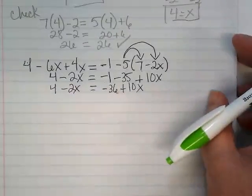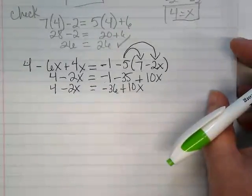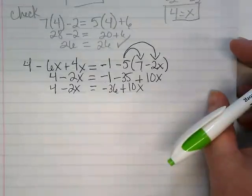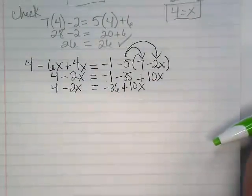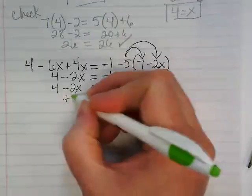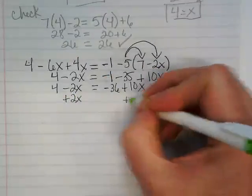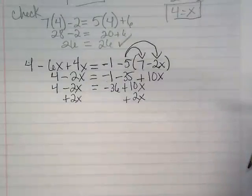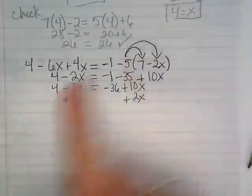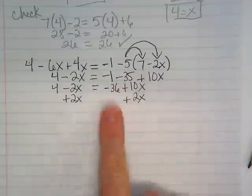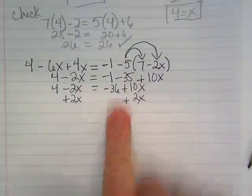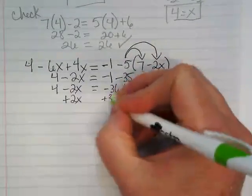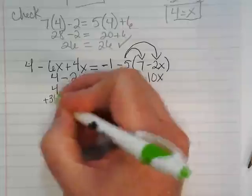And this is where I usually actually take a shortcut. What do you guys want to move first? 4, negative 2x, negative 36, or 10x? I think the negative 2x also. Let's add 2x to both sides. But before I do that, if I'm moving the 2x from this side to this side, what's going to have to leave here? And how am I going to move it? Yep, do opposite. So positive 36. Do you see what I'm doing? I'm doing both at the same time.